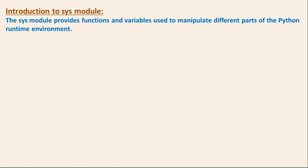The sys module provides some functions and variables. Any module always provides some functions, variables, or simply some operations. These functions and variables are used to manipulate different parts of the Python runtime environment. For example, if you are using Python 3.7.0, you can use this module to get that information. Simply assume that sys is used to get Python runtime environment details.